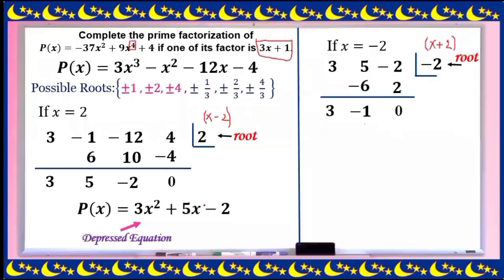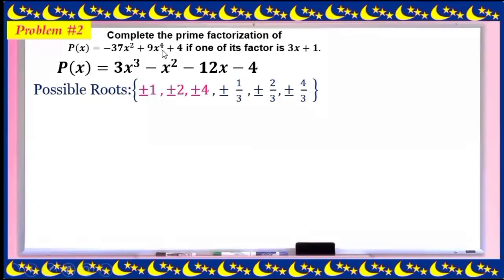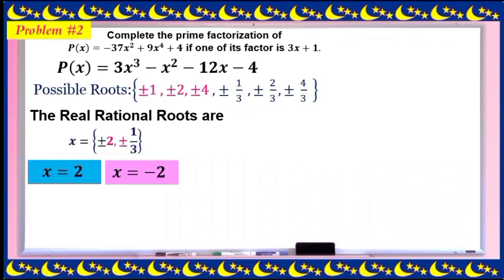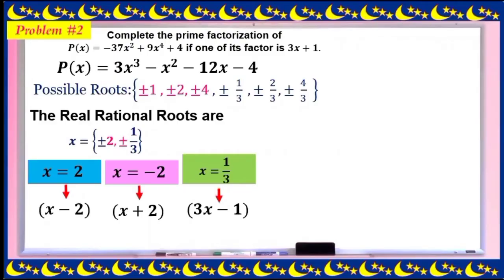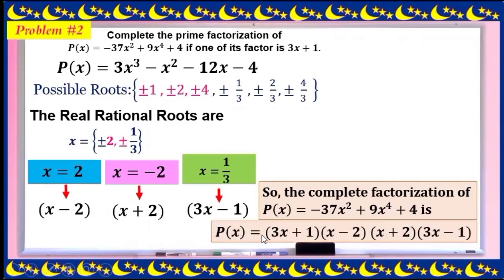The final depressed equation gives 3x - 1 as the last factor (root is x = 1/3). So we have four factors: (3x + 1), (x - 2), (x + 2), and (3x - 1). The complete factorization of p(x) = 9x⁴ - 37x² + 4 is: p(x) = (3x + 1)(x - 2)(x + 2)(3x - 1).